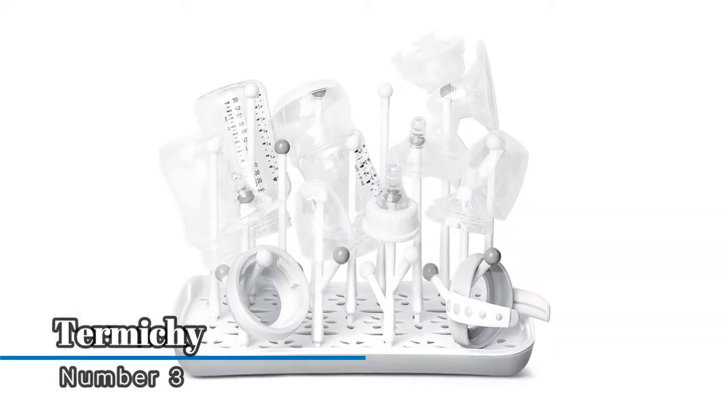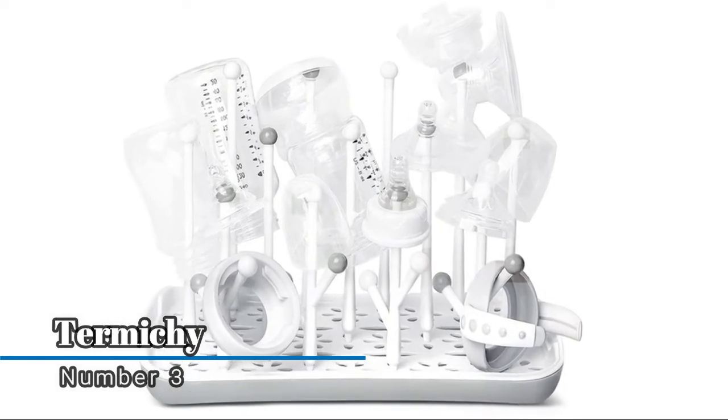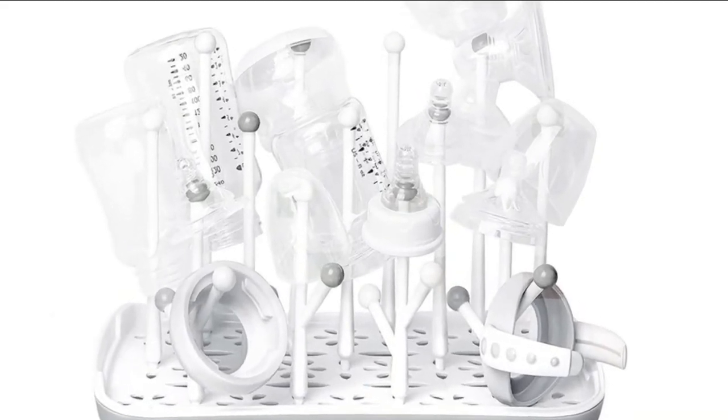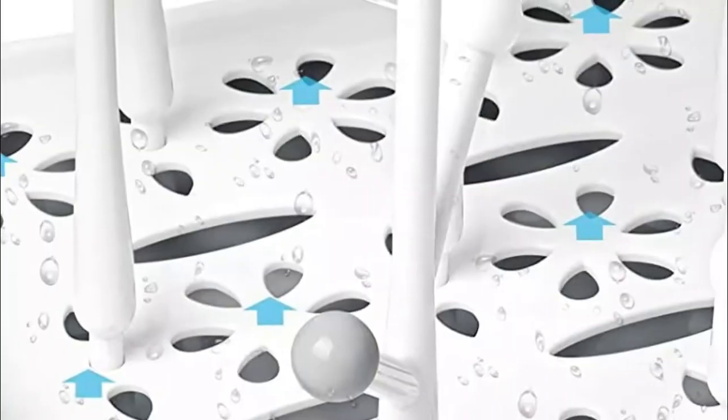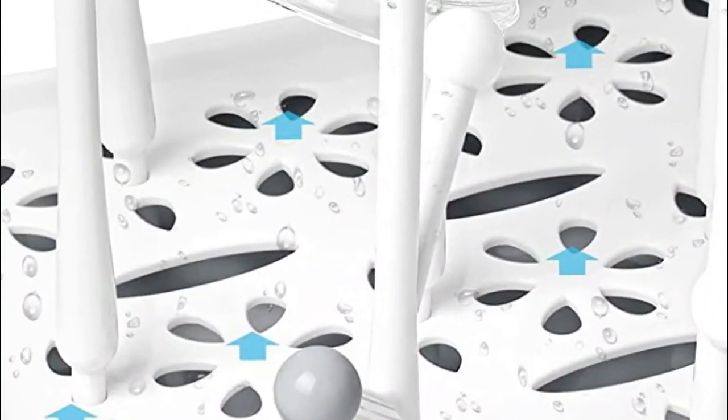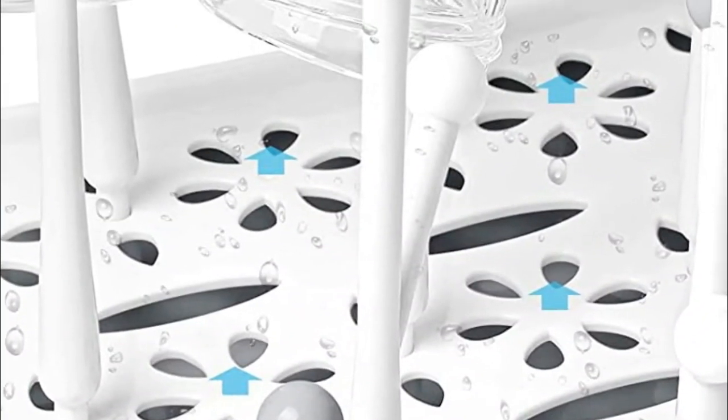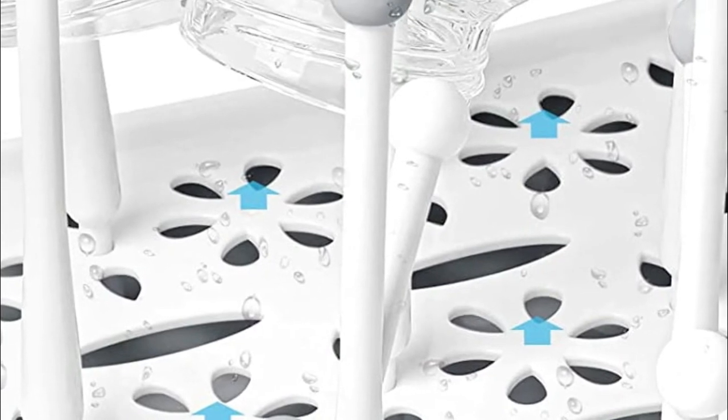Number three, Termichi. The bottle drying rack keeps baby small parts away from water and smaller countertop space, looks great in kitchen or restroom. Baby bottle dryer rack can hold all baby bottles and feeding accessories, dry all shapes and sizes, breastfeeding gear, sippy cups, nipples, pacifiers, pump parts, and others.